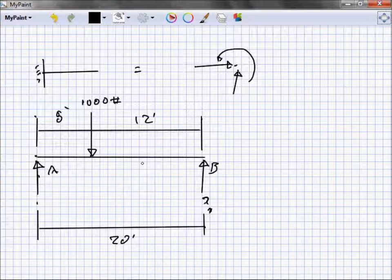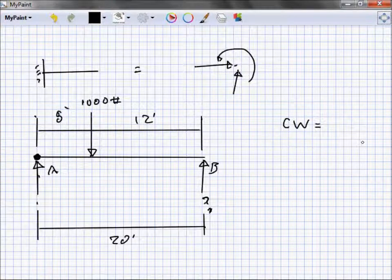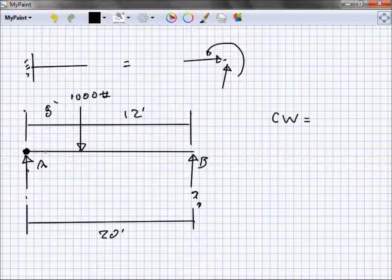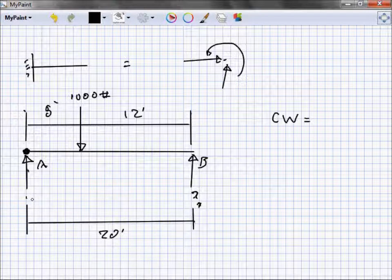What else do I know? I know that everything going clockwise has got to equal what's going counterclockwise. So if we're looking for B, let's put a pin right here on A. What makes that beam want to go clockwise?